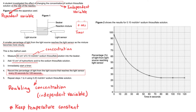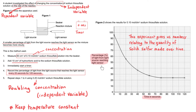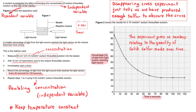This is similar to the disappearing cross experiment — you change concentration or temperature and observe the rate at which the cross becomes obscured. As time passes, the percentage of light reaching the sensor decreases. But it doesn't decrease at a constant rate — it decreases steeply at first, then less and less, and then it levels out, at which point we can assume the reaction is over.